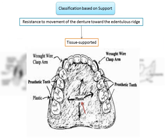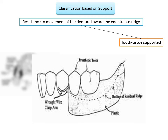Tissue-supported RPDs are primarily supported by the mucosa overlying the bone of the denture foundation area. They usually have plastic major connectors and are therefore usually interim RPDs. Tissue-supported RPDs will move in function because of the resiliency of the mucosa, and retention is customarily provided by rot-wire retentive clasp arms on selected natural teeth. The tissue-supported RPD is essentially a complete denture with some remaining natural teeth, and has the potential to cause soft tissue damage and periodontal attachment loss — accordingly it should be used for only a short period of time, about a year or less.